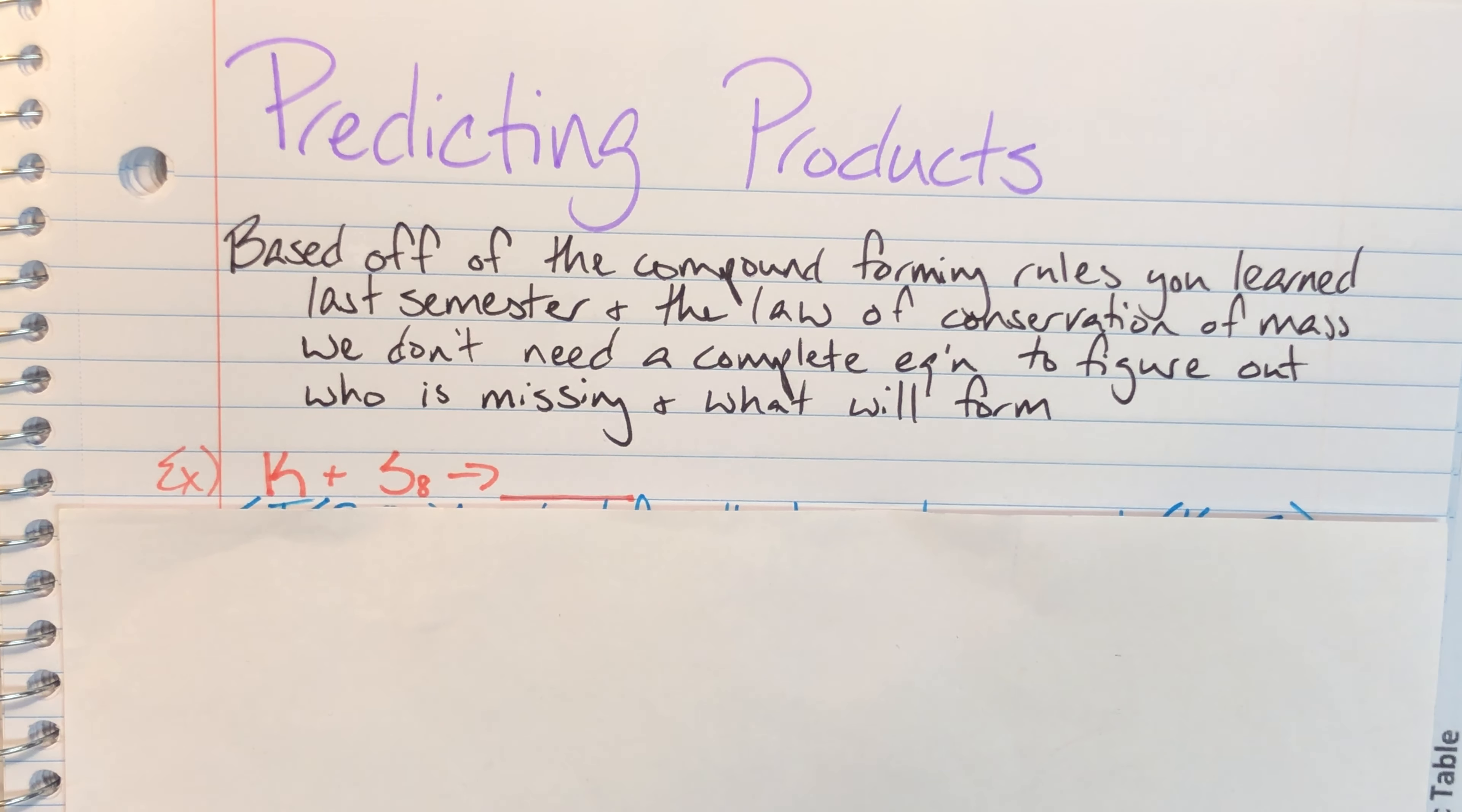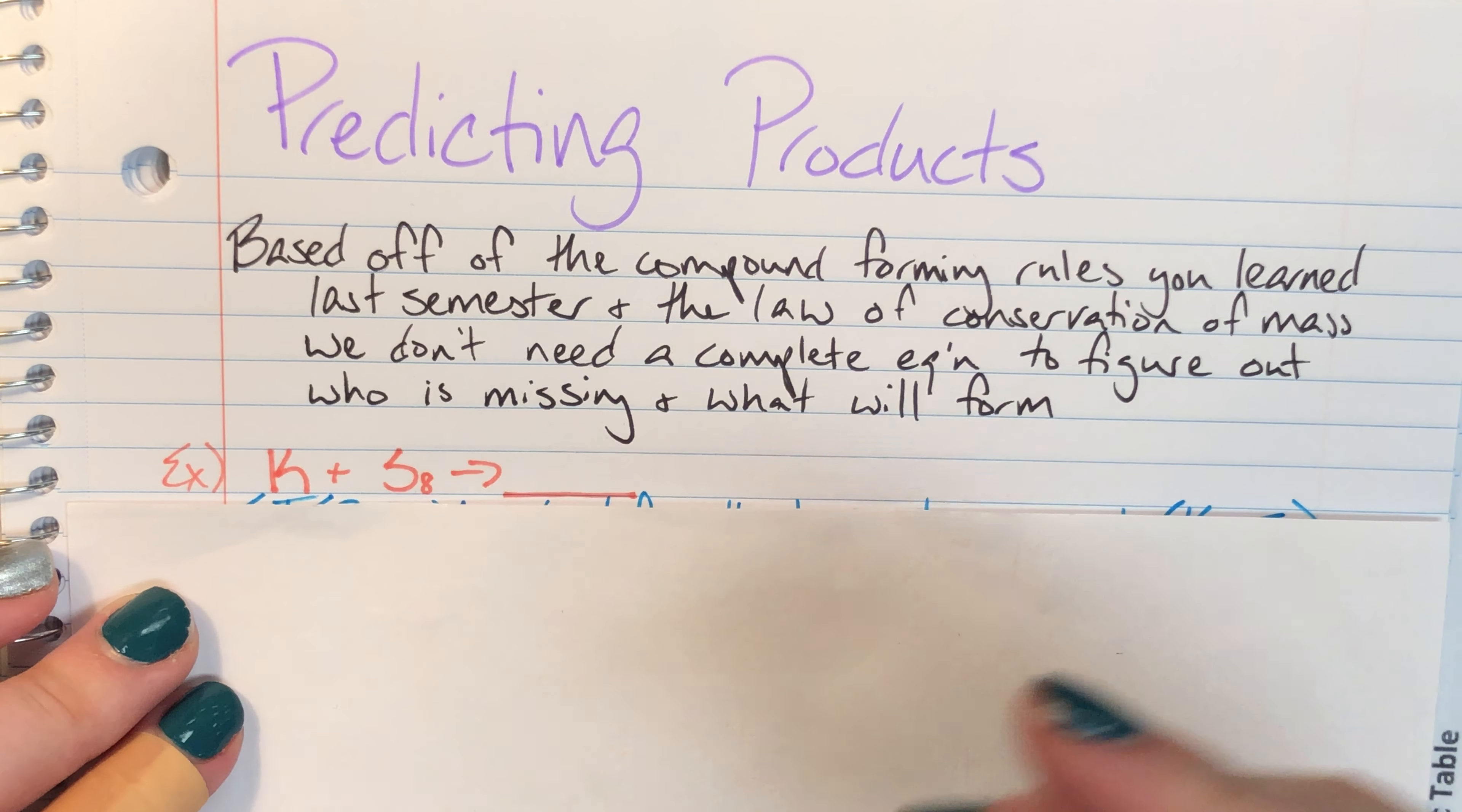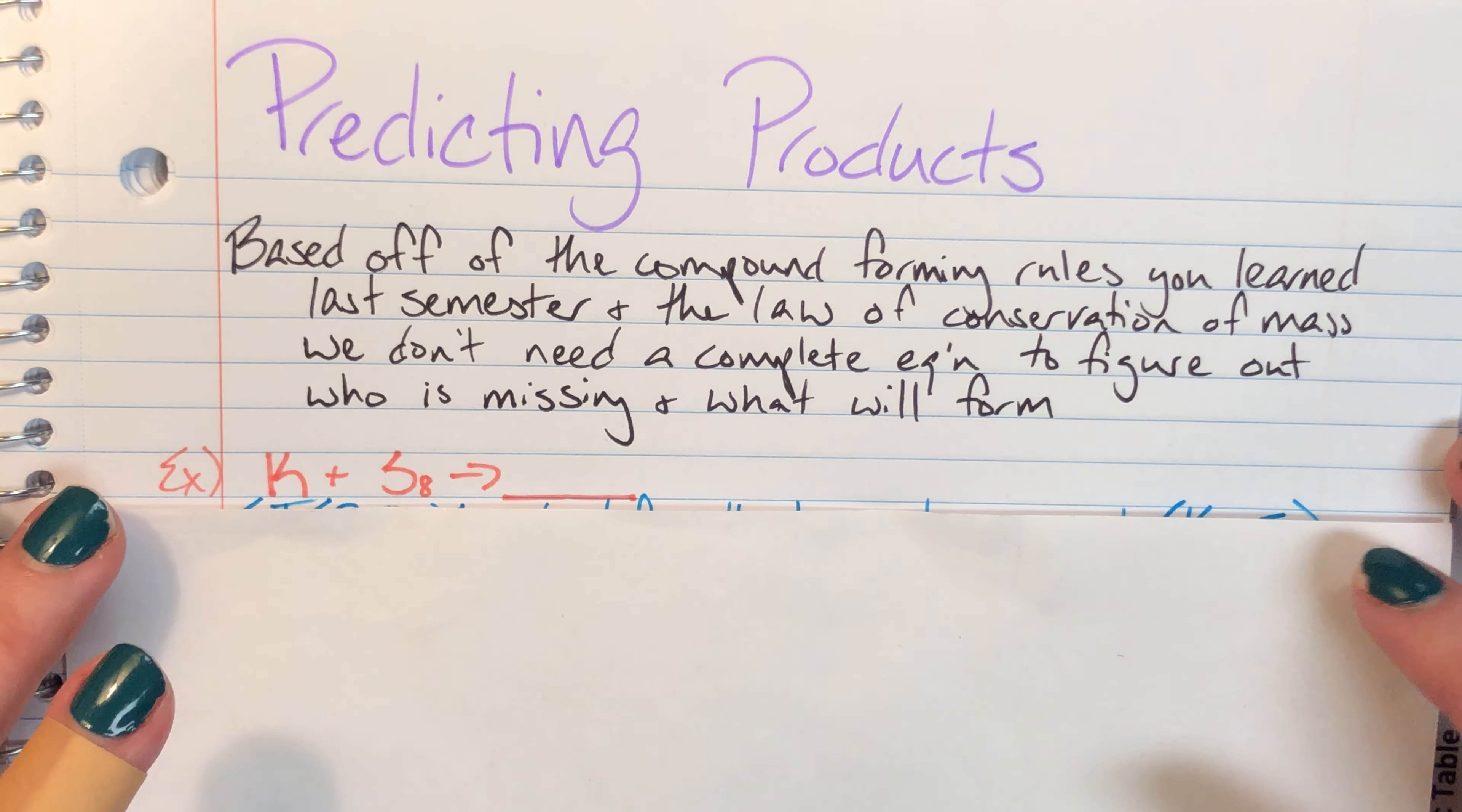So we're gonna look at this example equation first. I have potassium being added to sulfur and I'm going to form something but I do not know what I am going to form. First thing I'm gonna do is lay out what steps we would take and then we'll actually follow them.